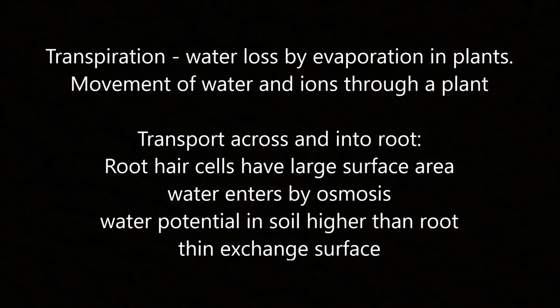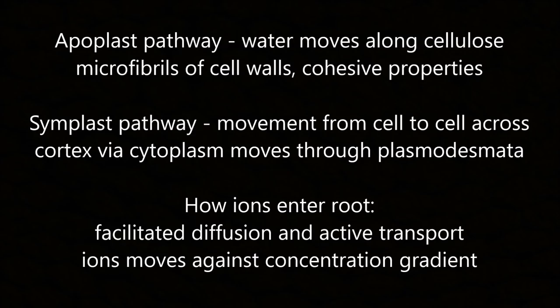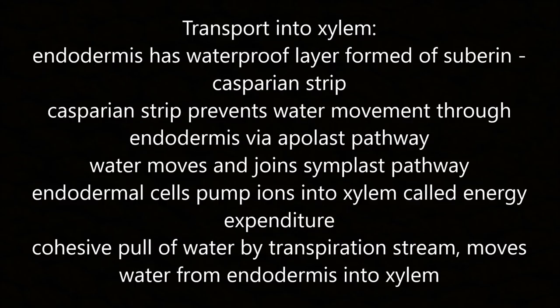Uptake and transport of water and ions in plants: transpiration is water loss by evaporation. Root hair cells have a large surface area so water enters by osmosis — the water potential in the soil is higher than in the root. The apoplast pathway is when water moves along the cellulose microfibrils of cell walls. The symplast pathway involves movement from cell to cell across the cortex via the cytoplasm through plasmodesmata. Ions enter the root by facilitated diffusion and active transport, moving against the concentration gradient.